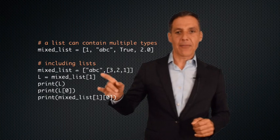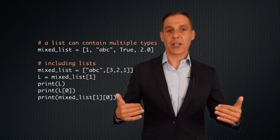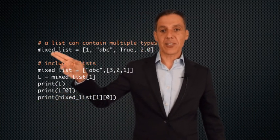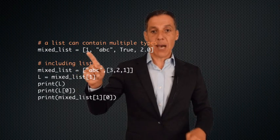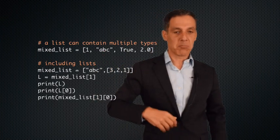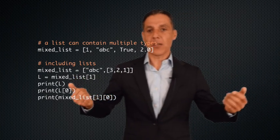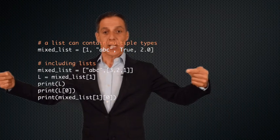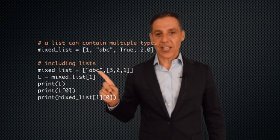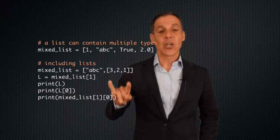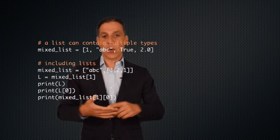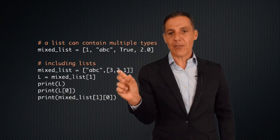Lists can hold anything. Up until now our lists have been homogeneous — all numbers or all strings. But this list is perfectly valid: mixed_list equals [1, 'ABC', True, 2.0] — one integer, one string, one boolean, one float. Weird, I don't know why you would do this, but perfectly fine. In addition, lists can contain lists. Here's a list with two elements: 'ABC' and a list [3, 2, 1] which itself has three elements. A list is just another data type.